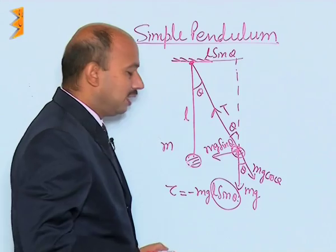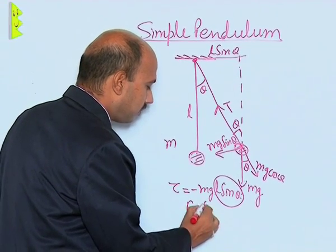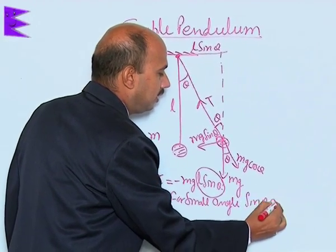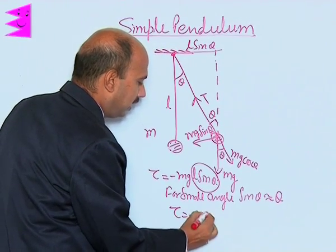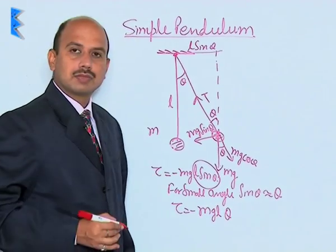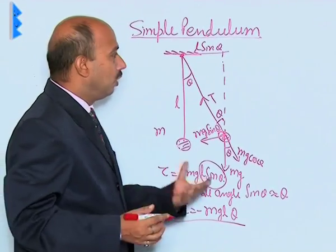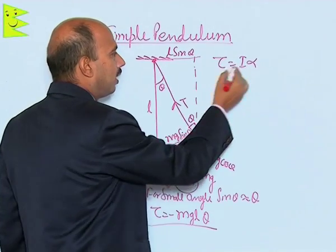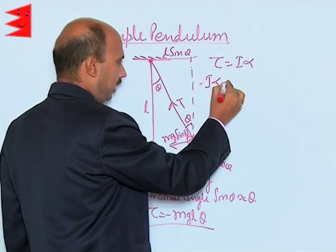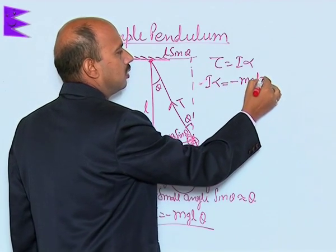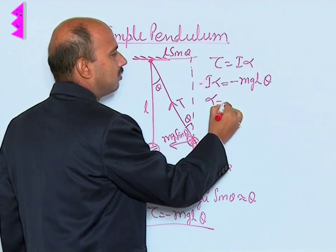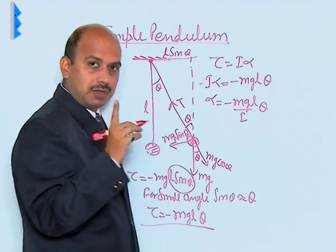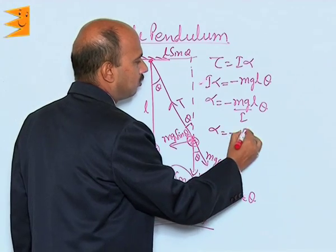For a small angle, we can write sin theta is equal to theta. So the torque is equal to minus m g L theta — this is the restoring torque. We also know torque is equal to moment of inertia times angular acceleration. So we can write I alpha is equal to minus m g L theta. Therefore alpha is equal to minus (m g L / I) theta. This is the condition for angular simple harmonic motion: alpha is equal to minus omega squared theta.